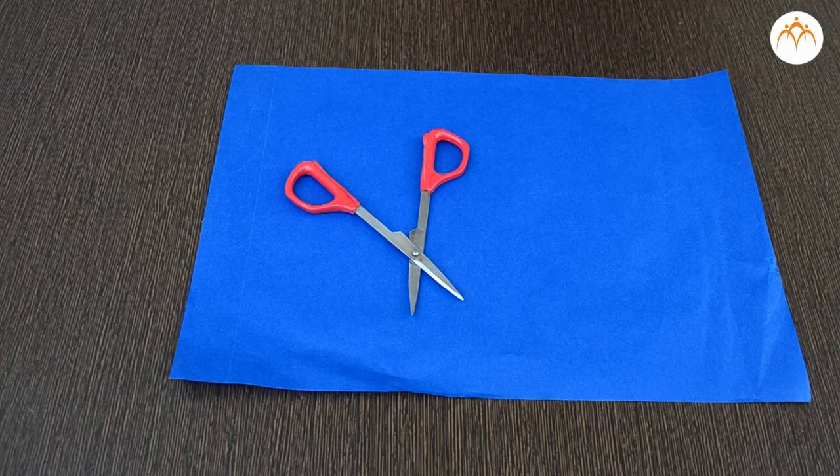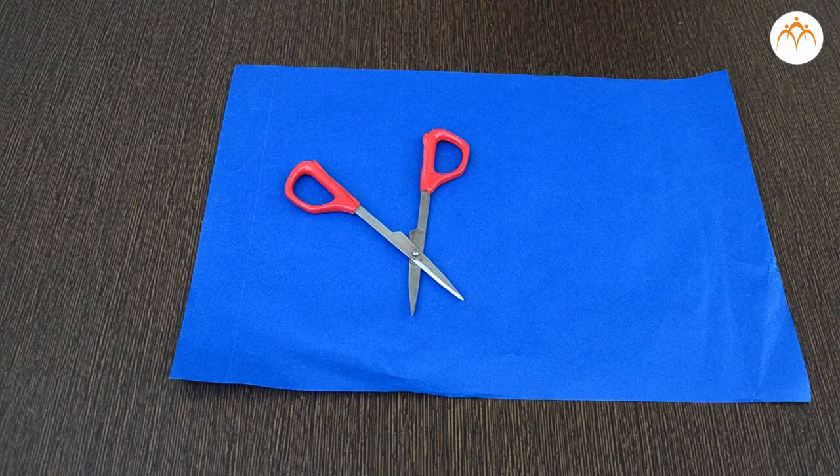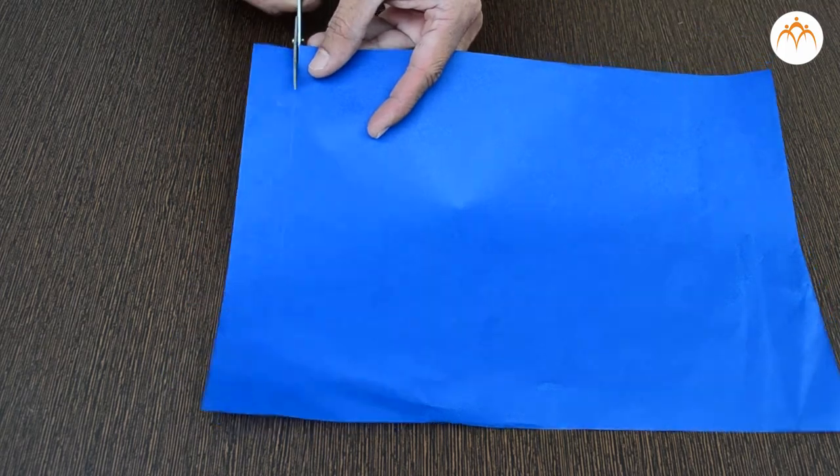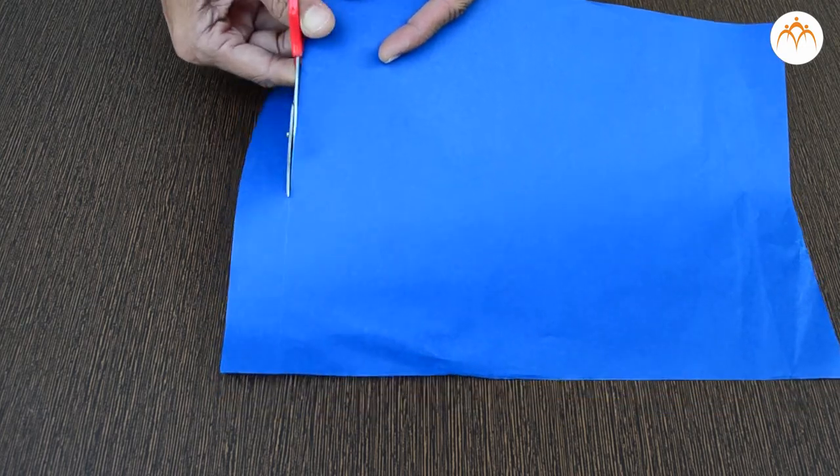The blades of a pair of scissors are two wedges. These blades are fixed together like two levers to make a machine that cuts things.